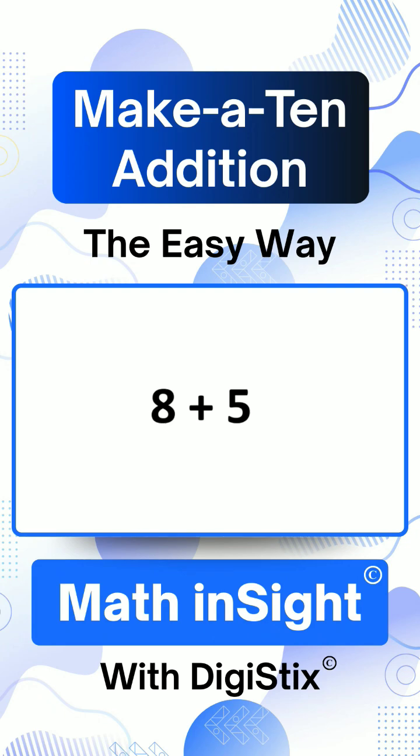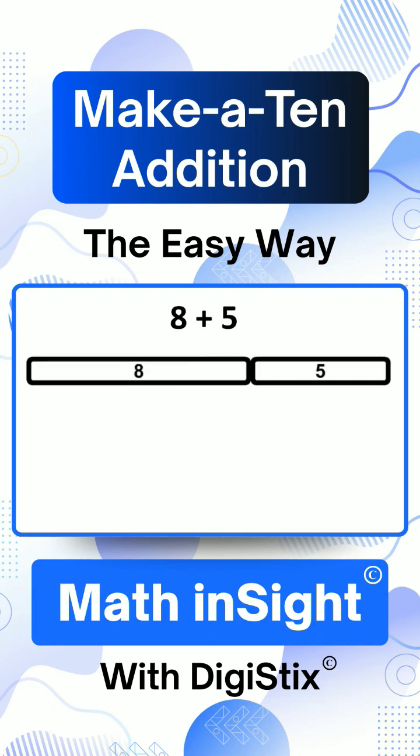8 plus 5. This shows the addition 8 plus 5. 8 and 5 together make a number over 10, which we show like this.